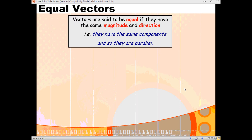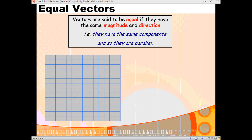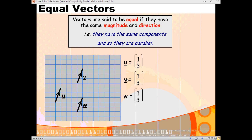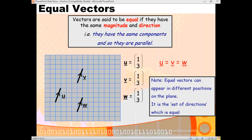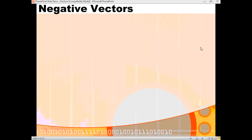Now, vectors are said to be equal if the set of instructions to go from one point to the next is exactly the same — they're going to have the same components, and they give us what we would call parallel vectors. We have 3 vectors here; they don't share the same start point or end point, but the journey is the same. You're going 1 to the right, 3 up each time, so each of these vectors has components of 1 and 3 in component form. They've got the same magnitude and the same direction, so these three vectors are equal and they are all parallel. For vectors to be equal, they don't need to have the same start point or end point — it's the set of directions that's equal.